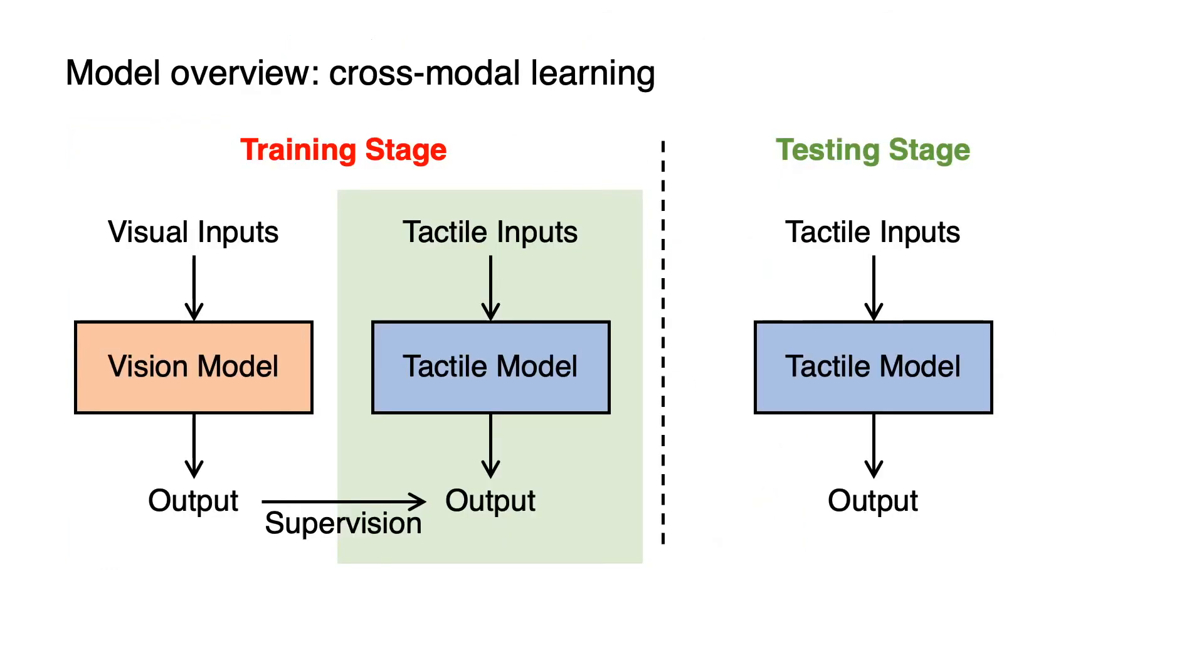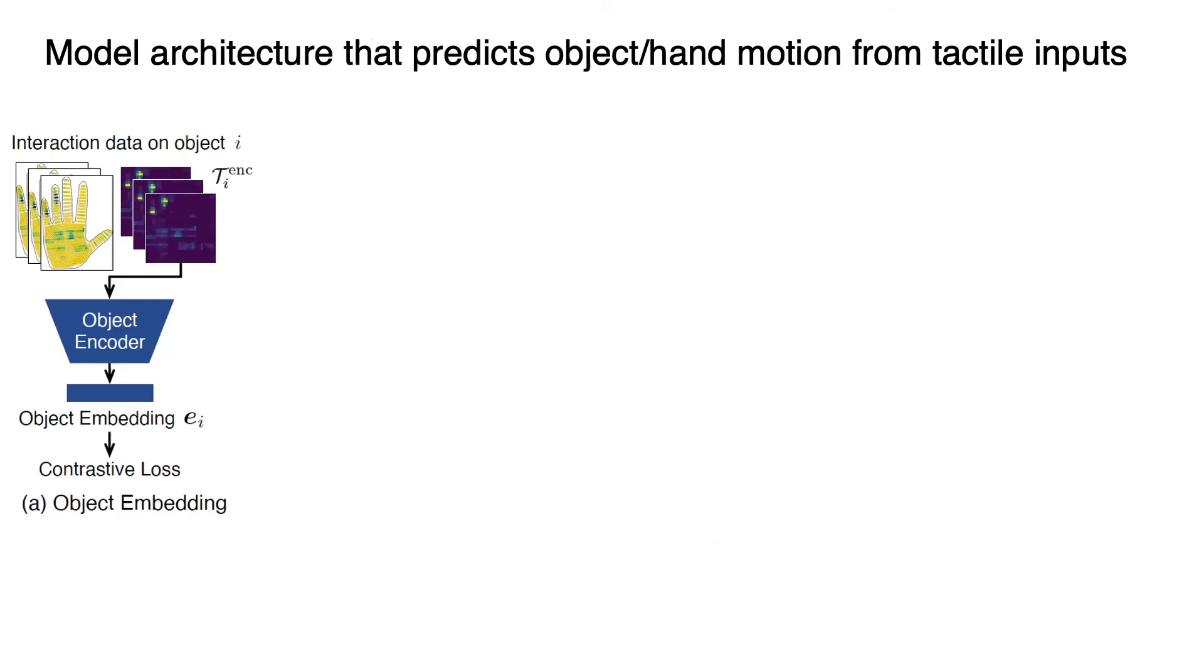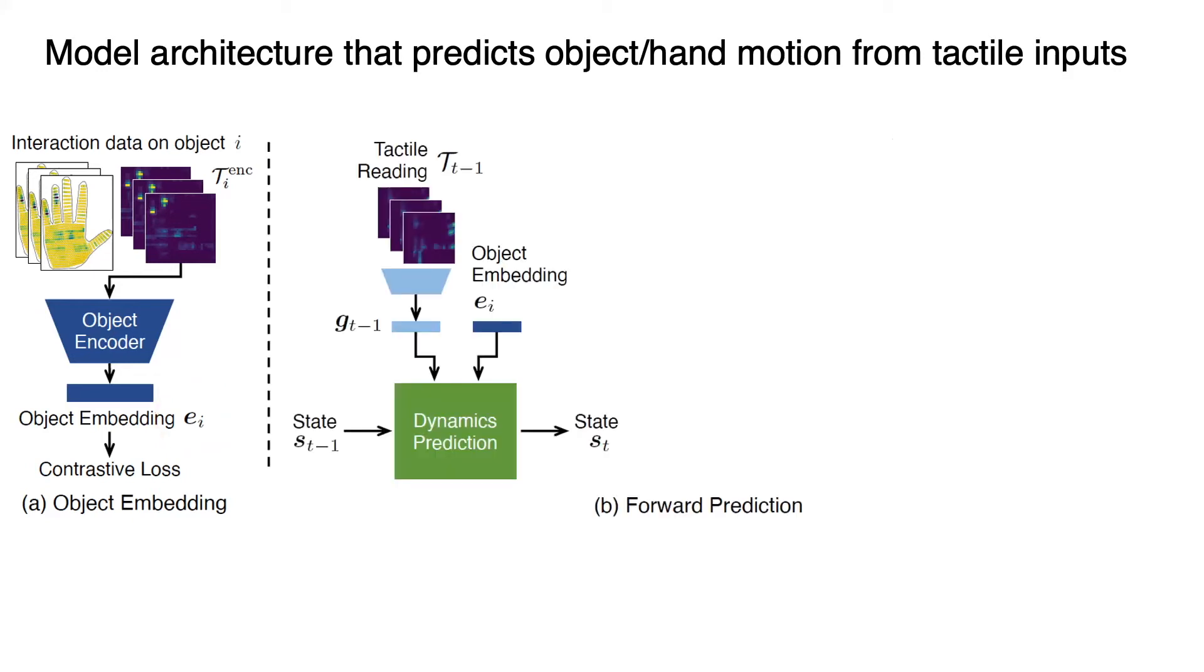After we have obtained the ground truth movements of both the object and the hands, we use the information as supervision to train the tactile model. Our tactile model consists of two parts. The first part is an object encoder that derives the object embedding EI by encoding a short period of interaction data into an implicit object-specific representation containing information like the mass and geometry.